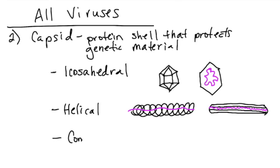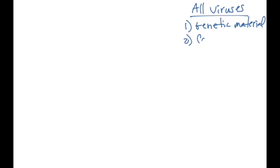The final type of capsid is called a complex capsid. It's called complex because it doesn't follow the same rules of symmetry. The icosahedral and the helical capsids are very symmetrical along a variety of axes. The complex capsids don't follow that same symmetry, and they are neither icosahedral nor helical. So all viruses have some sort of genetic material and some sort of capsid to protect that genetic material.